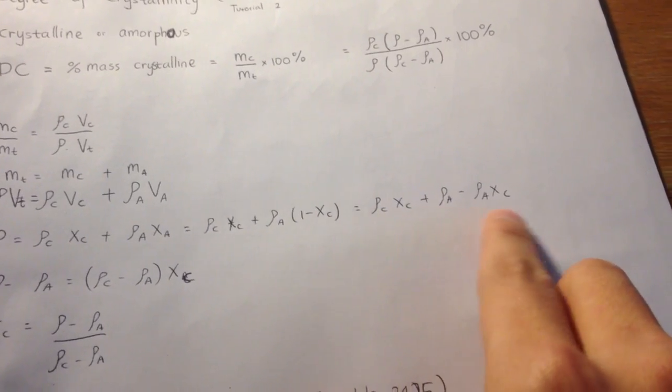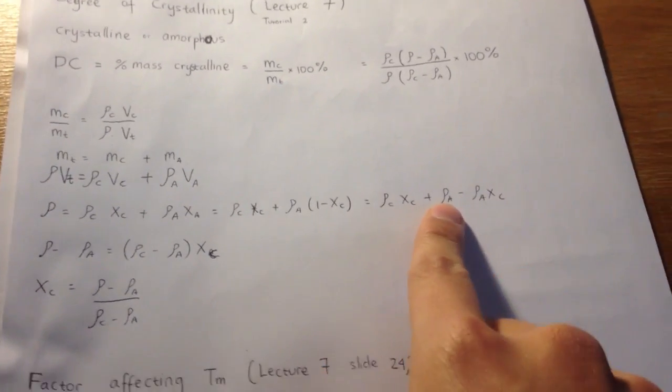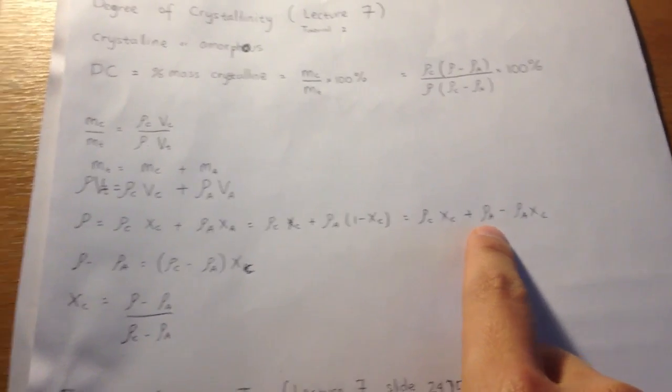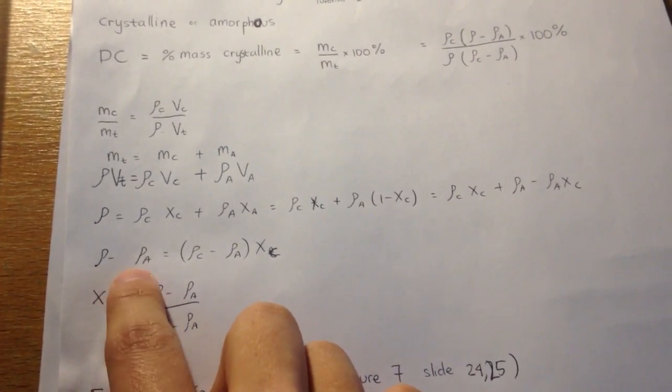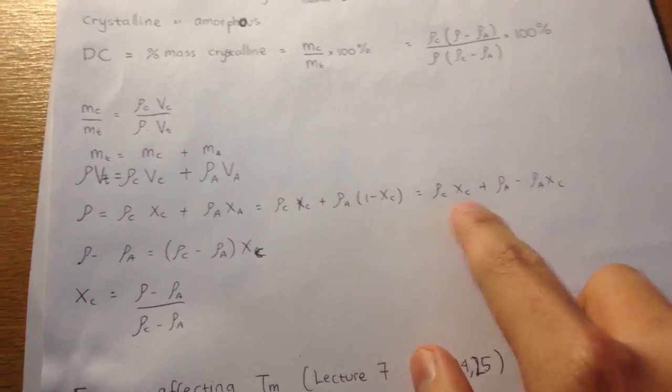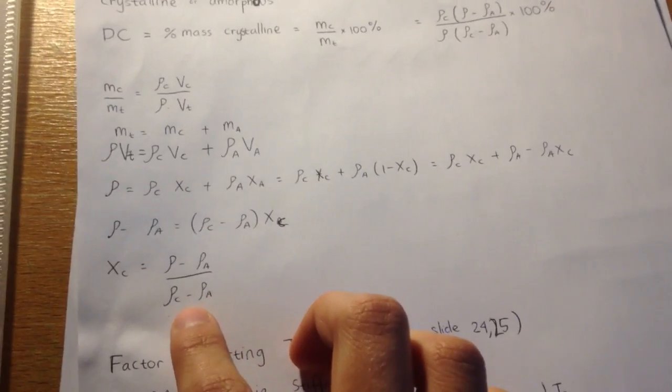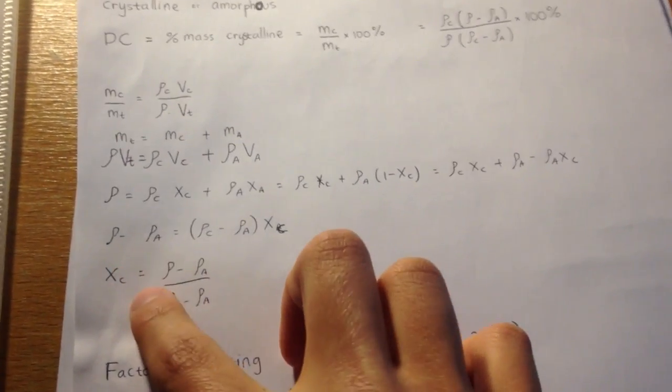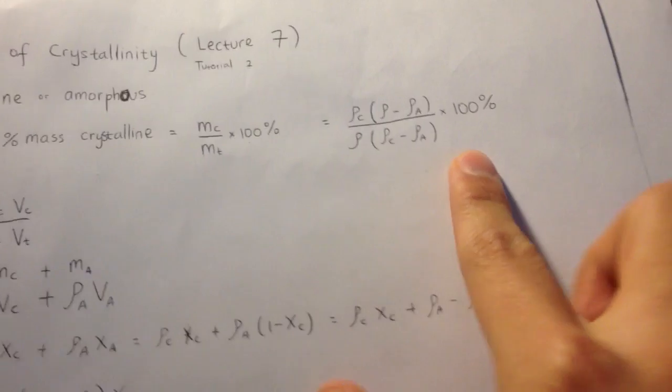You expand this, and from right hand side, the rho a changes to the left. So it's rho minus rho a equals (rho c minus rho a) times xc. So we get xc is like this. And we substitute back in, so we get this formula.